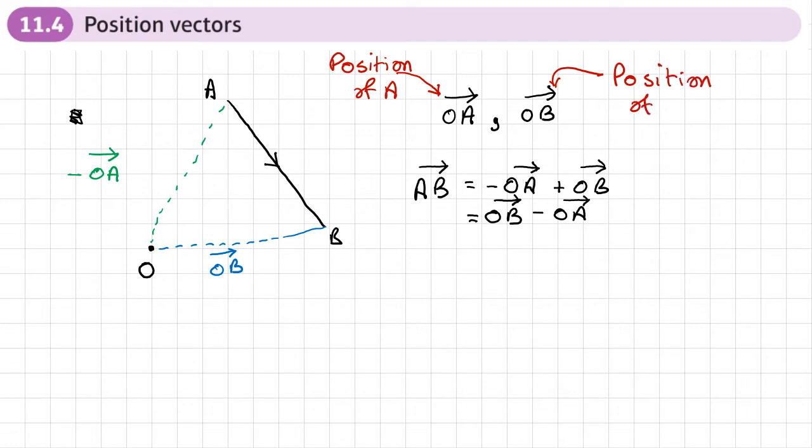How do we get, or what's a vector that takes me from A to B? So this is why it's called position vectors. I know the position, which is given by this and this. How do we get from one position to another?